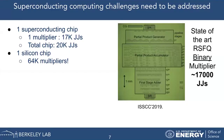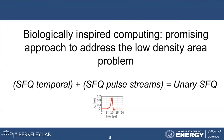However, here is the challenge: a state-of-the-art RSFQ chip can only fit one multiplier, which requires around 17,000 JJs. Comparing this with a silicon chip today that can fit 64,000 multipliers, there is a big gap we need to fill. This is where my research comes in. I believe that biologically inspired computing is the answer to leverage superconducting ideas, and that's why we came up with Unary SFQ.